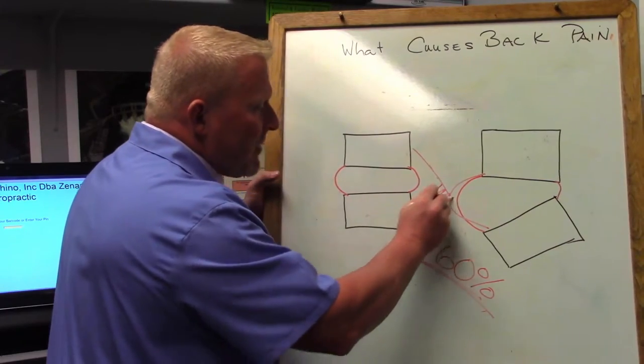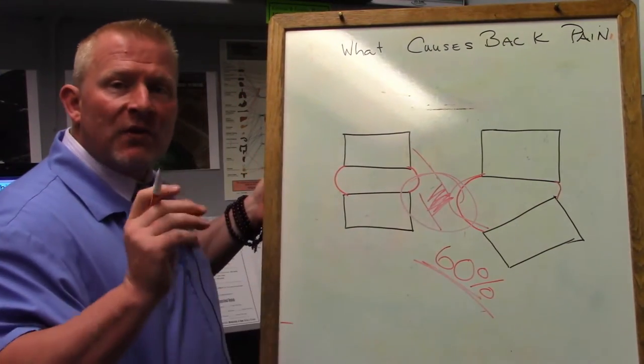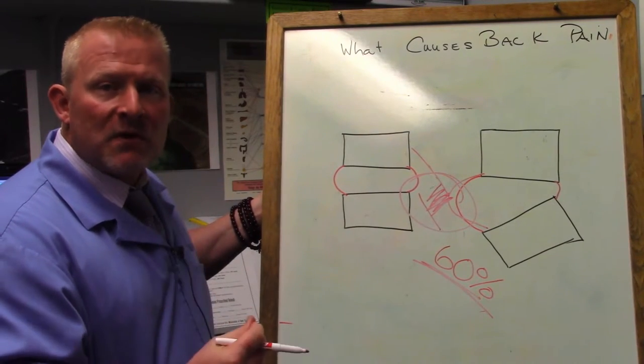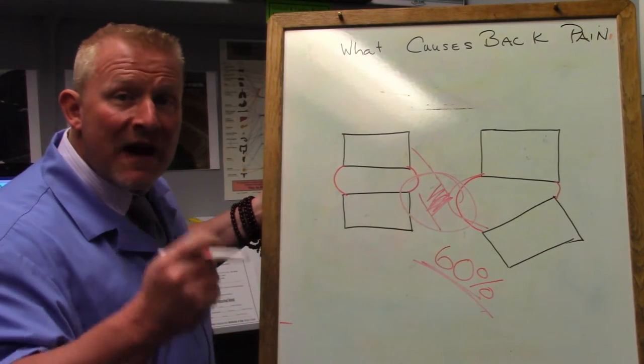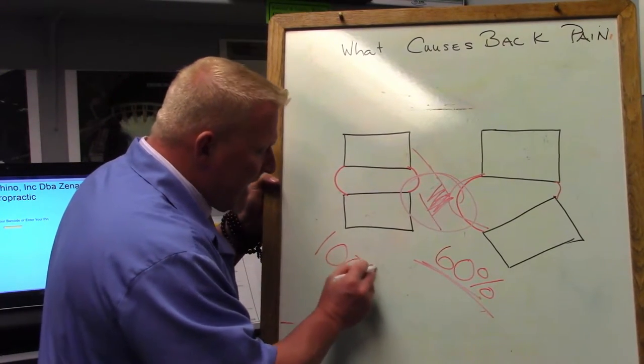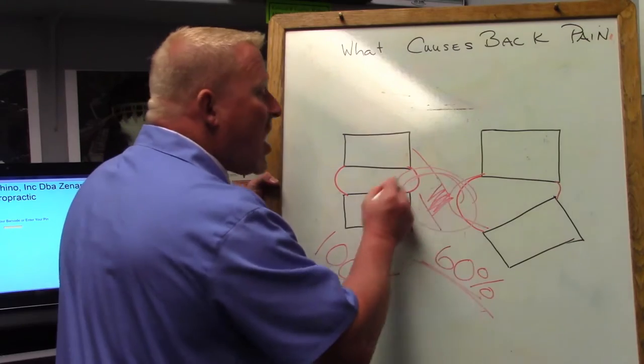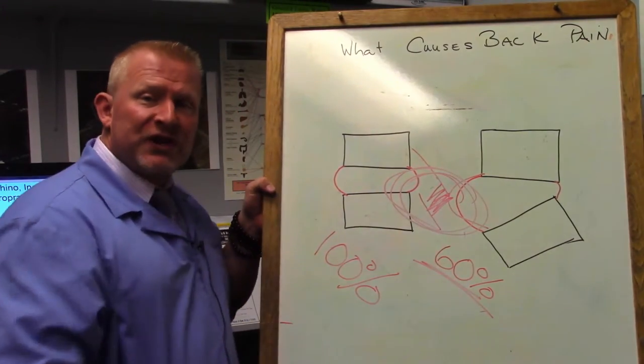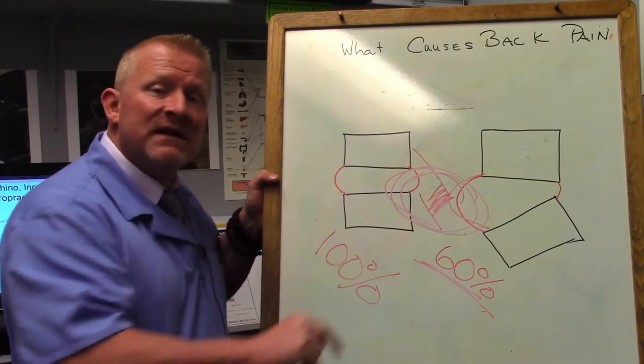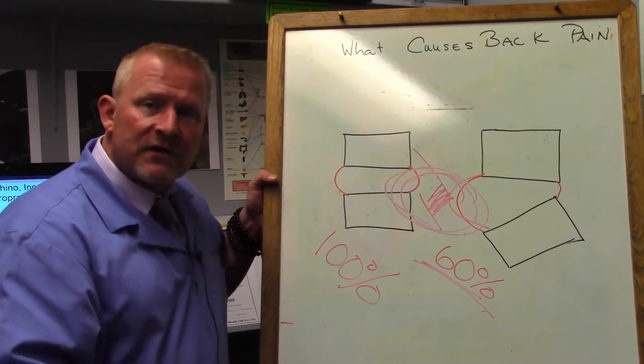The joints in between the vertebra—the joint capsule and joint capsule tissue—are the most sensitive and most richly innervated with nerve fibers. So when we look at that doctor who said 100% of back pain is caused by spinal joint dysfunction, that means chiropractic can help spinal joint dysfunction.